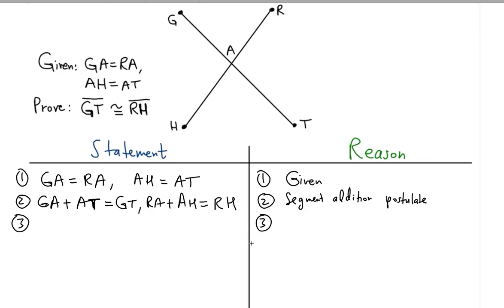Now the next thing is to realize that we can substitute one of the participating subsegments. Notice that RA can be substituted with GA because GA is equal to RA as part of the given statement. We can rewrite this equation substituting RA with GA, so that means GA plus AH is equal to RH.